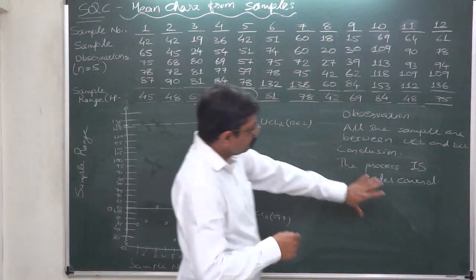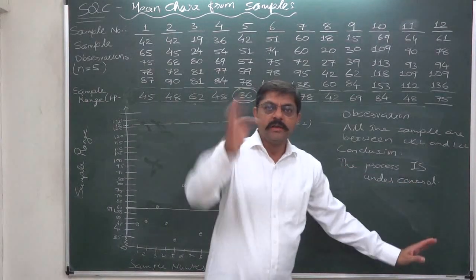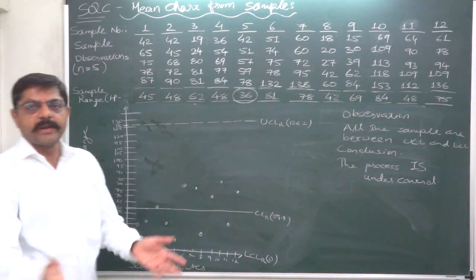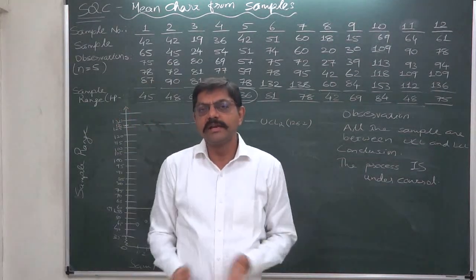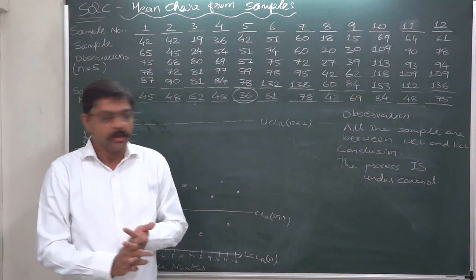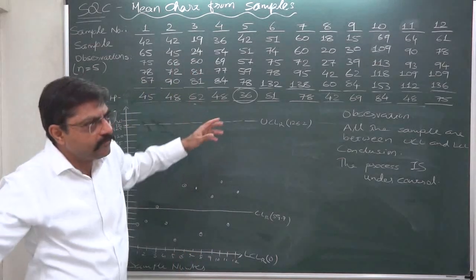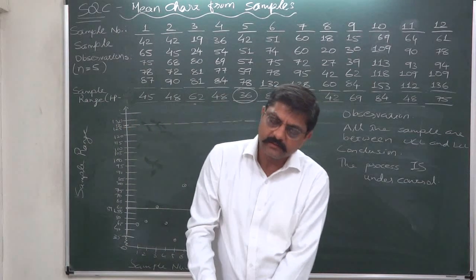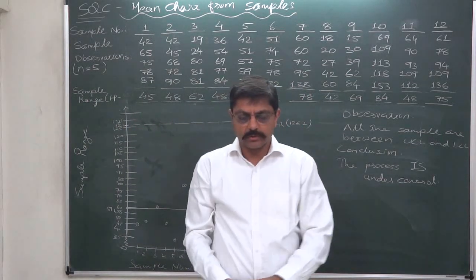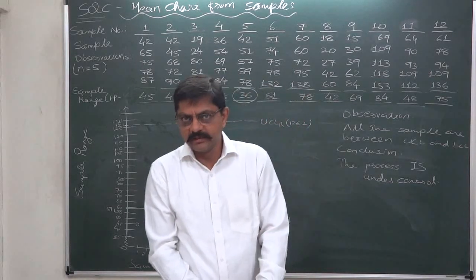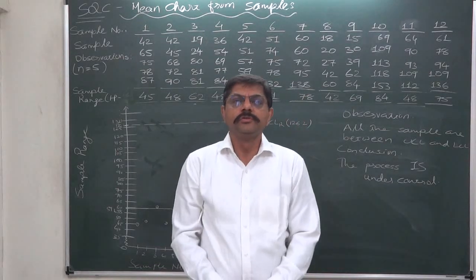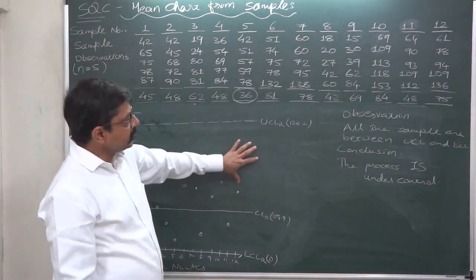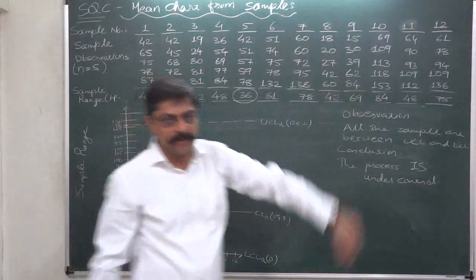Here the range chart shows the process is under control. We need to interpret the mean chart, which we already interpreted in the previous lecture, and we concluded that the process is not under control. Ultimately, we can broadly conclude for this sample study and this process that the process is not under control. I hope this lecture proves useful to understand the process of constructing a range chart from information about samples.